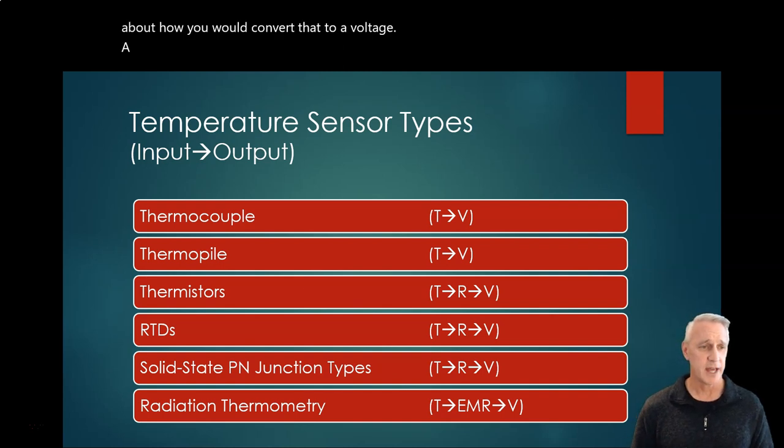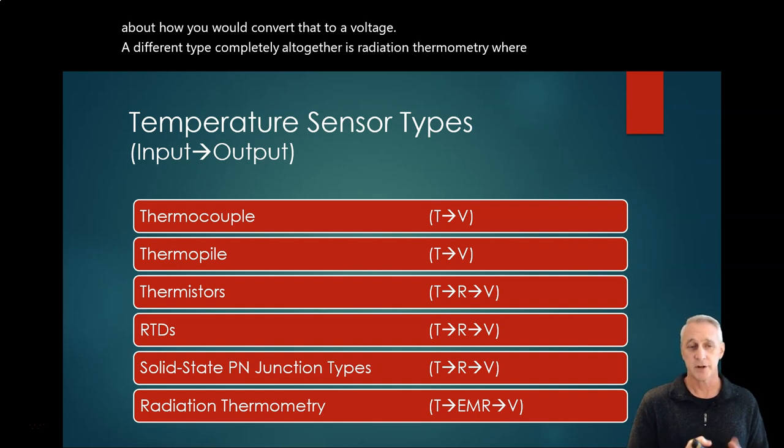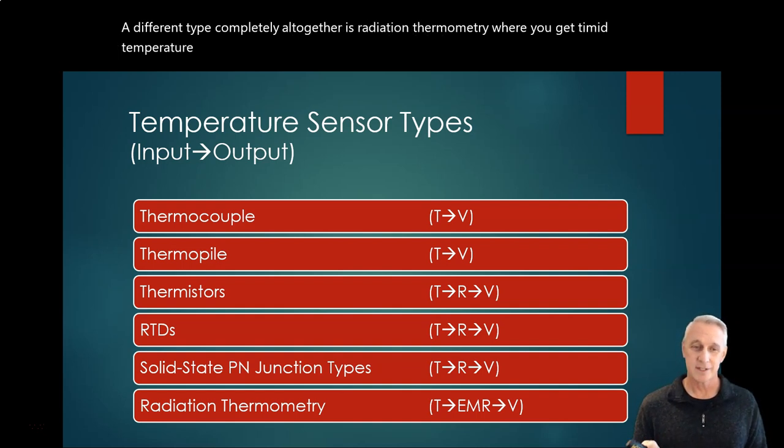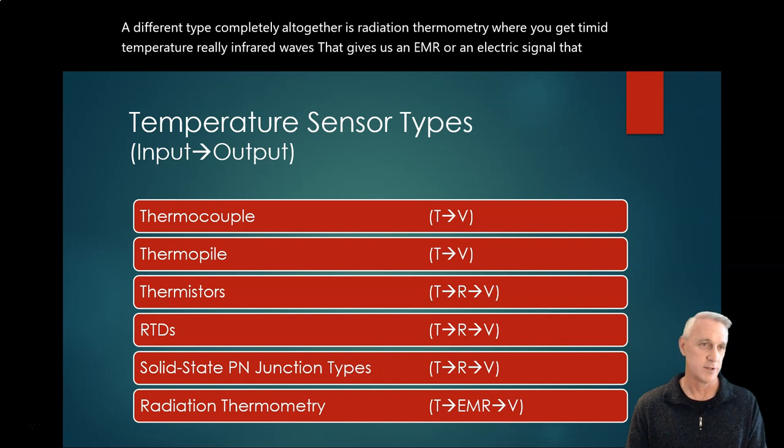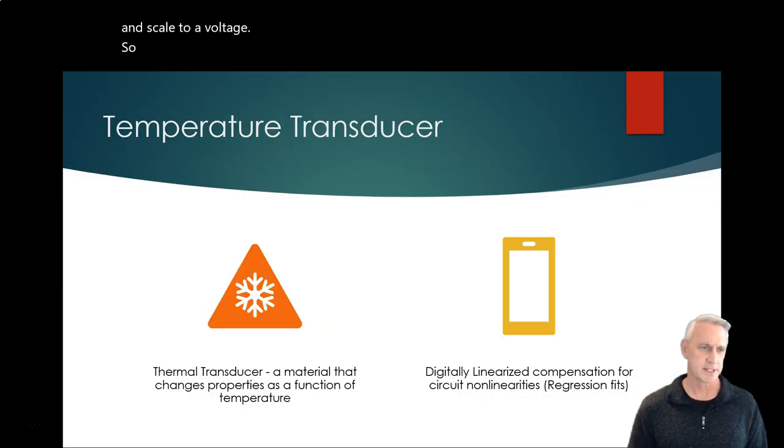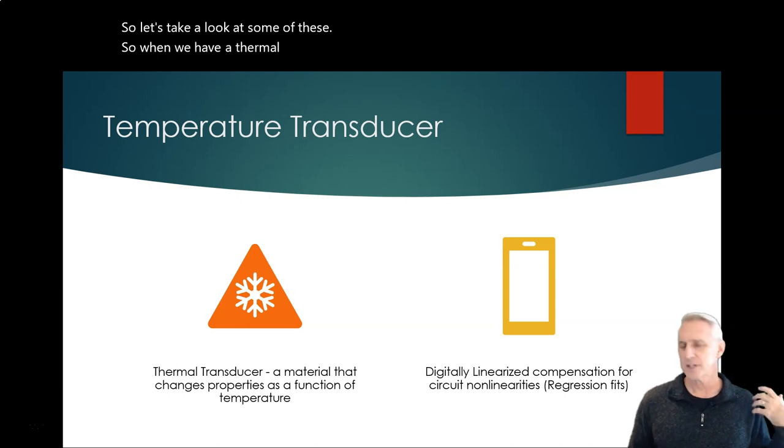A different type altogether is radiation thermometry where you get temperature, really infrared waves, that gives us an EMR or electric signal that we convert and scale to a voltage. So let's take a look at some of these. When we have a thermal transducer, we want something that changes with temperature.